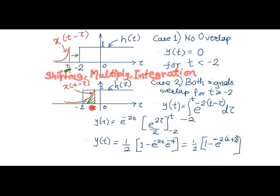Integration will take place for the common area where both signals overlap from minus 2 to t. In the formula now we substitute x of t minus tau as e raised to minus 2 times t minus tau. Since h of tau is 1 here, we can assume this signal is getting multiplied by 1.